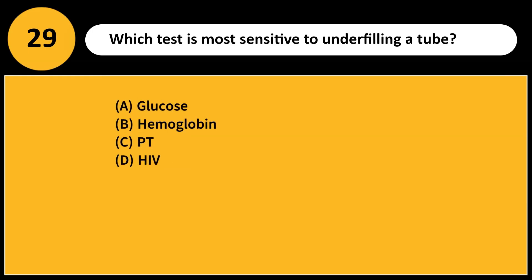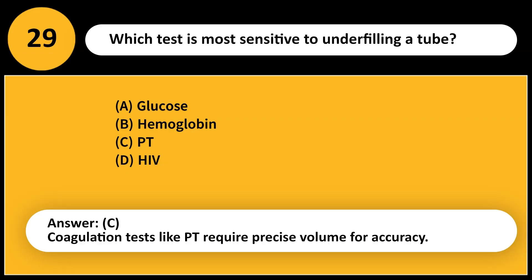Which test is most sensitive to underfilling a tube? A. Glucose. B. Hemoglobin. C. PT. D. HIV. Answer: C. Coagulation tests like PT require precise volume for accuracy.